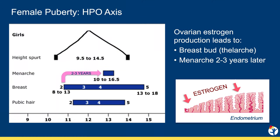The easiest way to talk about managing AUB is to think about how this process develops in the first place. Puberty in girls begins when the hypothalamus and the pituitary signal the ovary to start making estrogen. The presence of estrogen causes the development of breasts, and over the next 2-3 years, estrogen stimulates the lining of the uterus to become increasingly vascular and thickened.